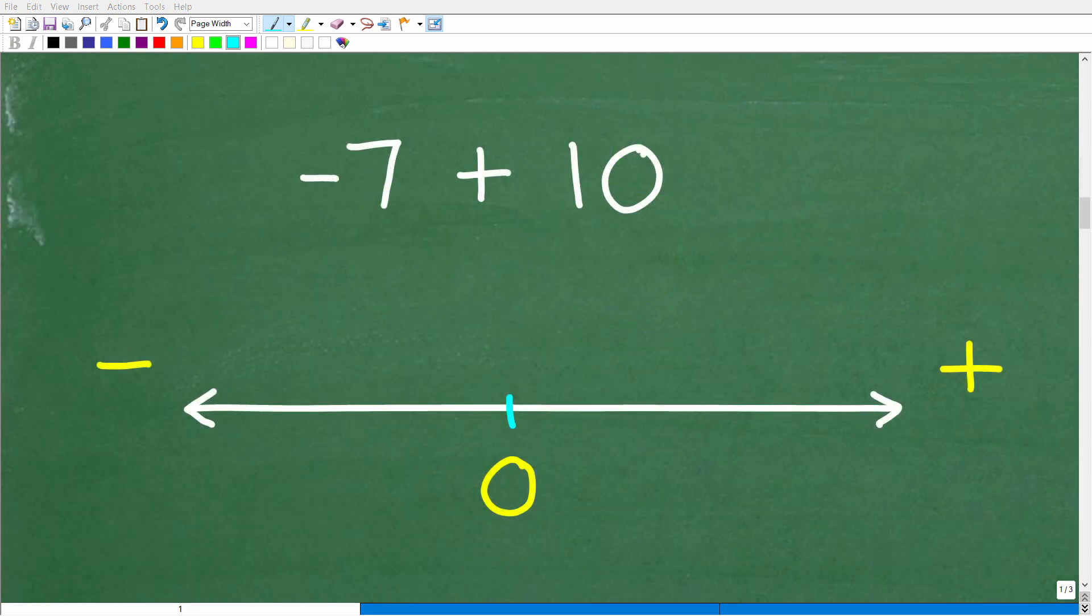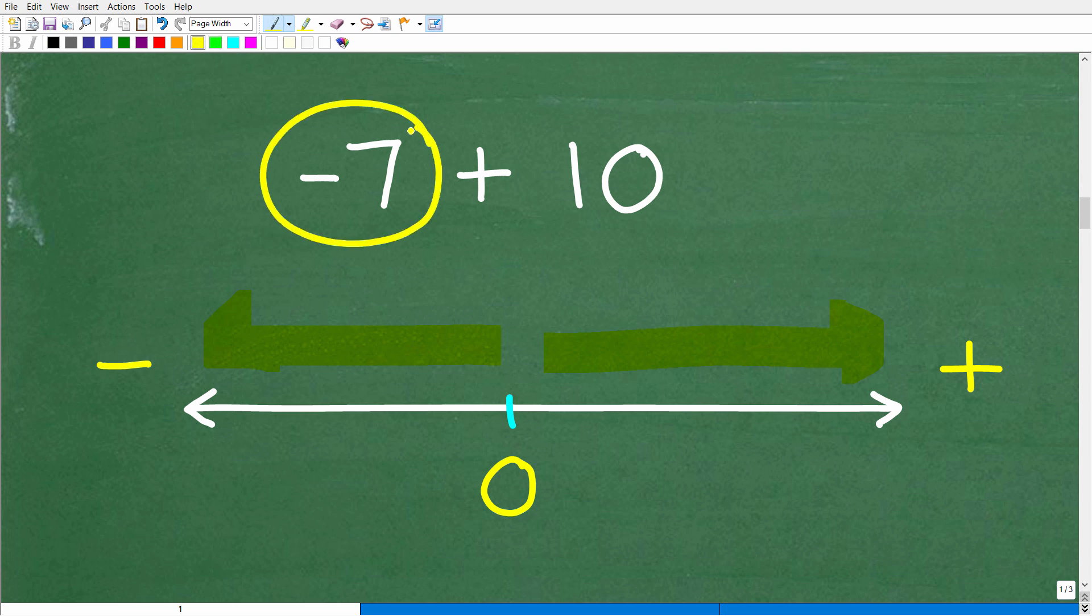Another way to add positive and negative numbers is to think about a number line. Numbers to the left of 0 are negative and numbers to the right of 0 are positive. We can plot this number, negative 7. That's going to be 1, 2, 3, 4, 5, 6, 7. Right here is -7 on the number line.